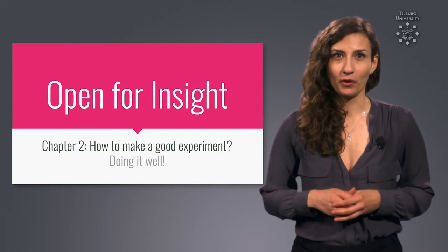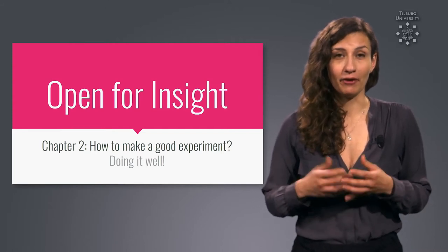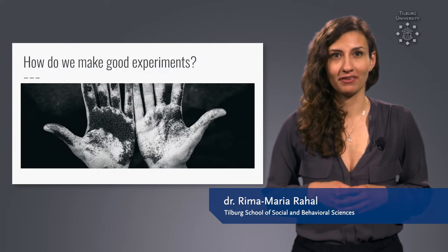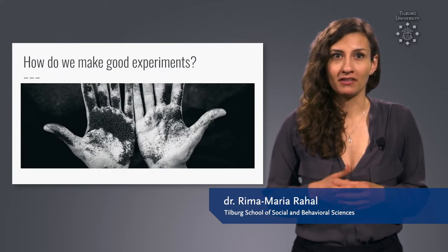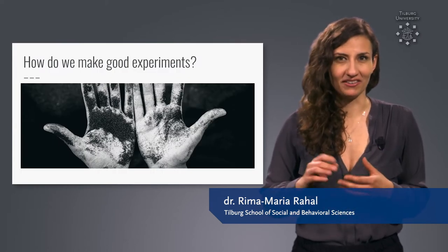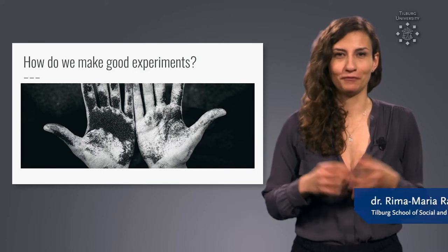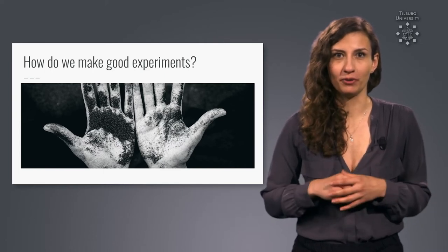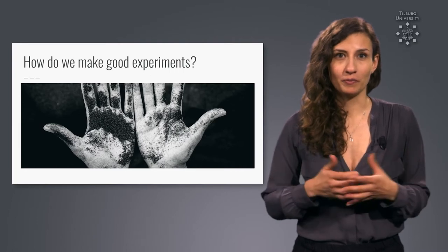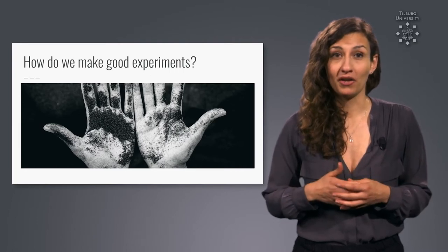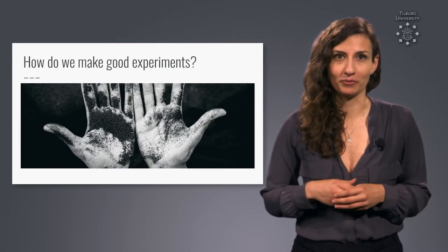In this part of the course, we will work on understanding how to make a good experiment. Now that we've seen that just observing is not quite enough, we are in the business of dirtying our hands and getting involved in the real world. We will look at how experiments work and why they help us identify causal relationships.